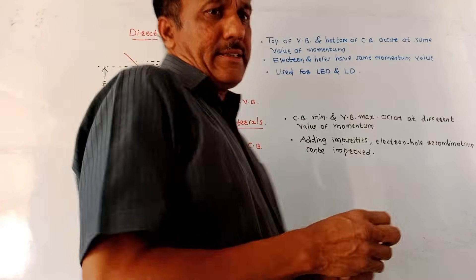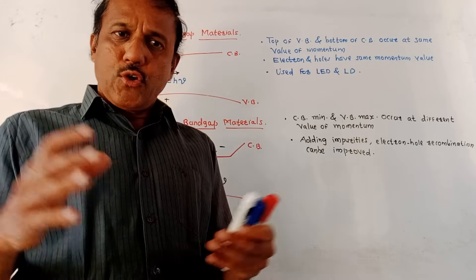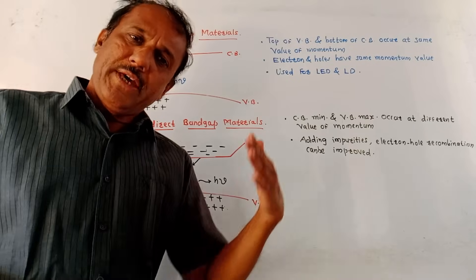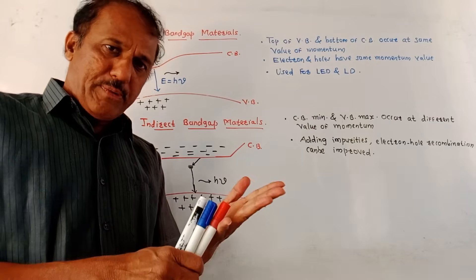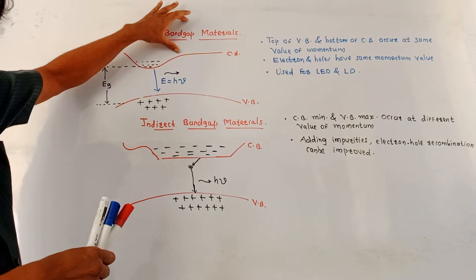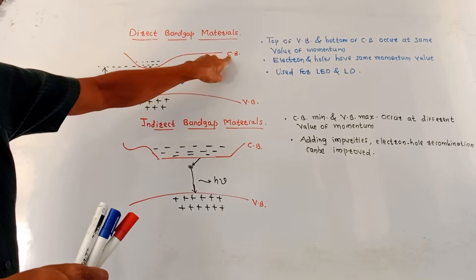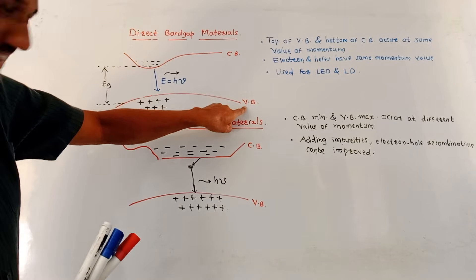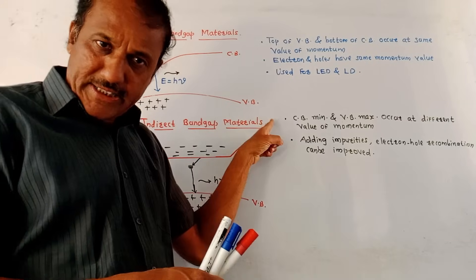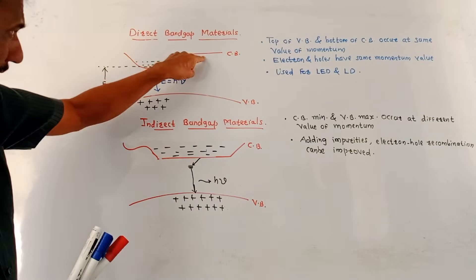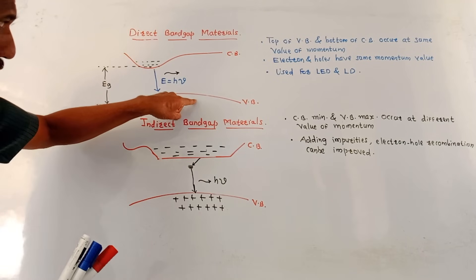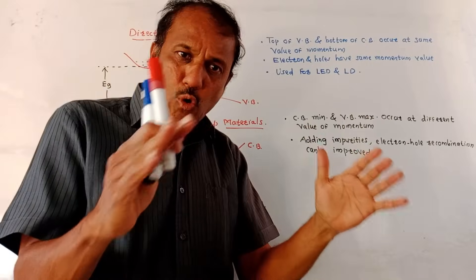Next part is types of semiconducting materials used for laser sources like LED and laser diode. From the exam point of view, you may expect a question like: distinguish between direct and indirect bandgap semiconducting material. In direct bandgap semiconducting material, I have drawn two bands — upper is conduction band, lower is valence band. The bottom of the conduction band and top of the valence band are at the same value of momentum.